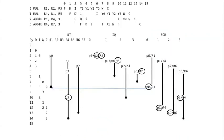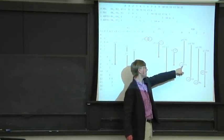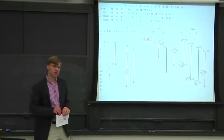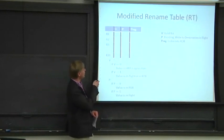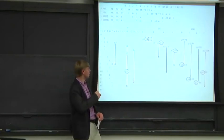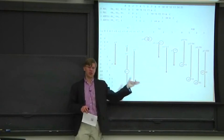We no longer have a free list — we got rid of that structure. Our renaming table, instead of having actual physical registers, is going to have reorder buffer entries — we effectively call that a physical register. We basically merge our physical registers and our reorder buffer together. Similar sorts of analogs happen for when something becomes free: we change the valid bit in the rename table to 0, which is effectively the same thing as becoming free.